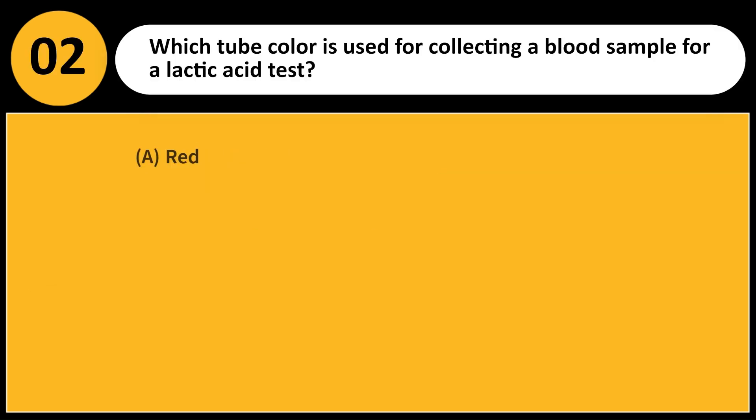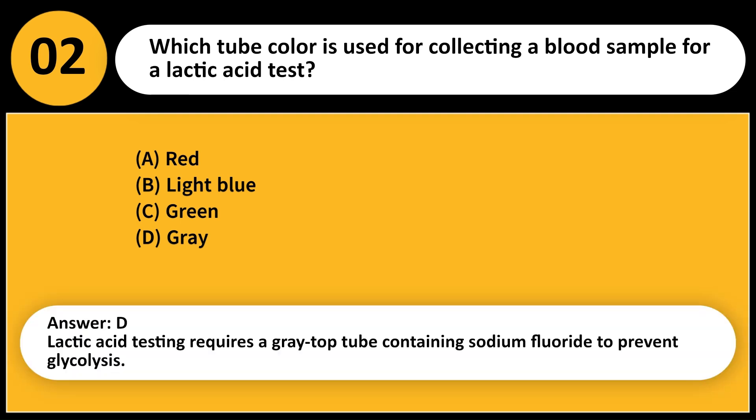Which tube color is used for collecting a blood sample for a lactic acid test? A. Red. B. Light blue. C. Green. D. Gray. Answer: D. Lactic acid testing requires a gray top tube containing sodium fluoride to prevent glycolysis.